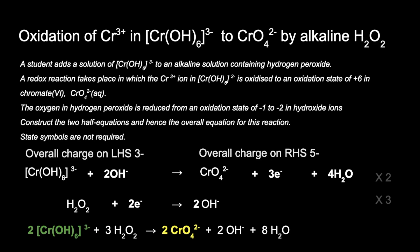Doubling the chromium half equation takes the OH⁻ ions to 4, and trebling the hydrogen peroxide equation gives 6 OH⁻, leaving 2 hydroxide ions on the right hand side when cancelled down. The colour change is from green to yellow — the Cr(OH)₆³⁻ ions are green, and the chromate 6 ion, CrO₄²⁻, is yellow.